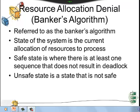Now let us see how resource allocation can be denied — that is, if a request would lead to deadlock, how it can be denied. This algorithm is referred to as the Banker's Algorithm. The state of the system is the current allocation of resources to processes. A safe state is where there is at least one sequence that does not result in deadlock. An unsafe state is where no such sequence exists — each sequence would lead to a deadlock.